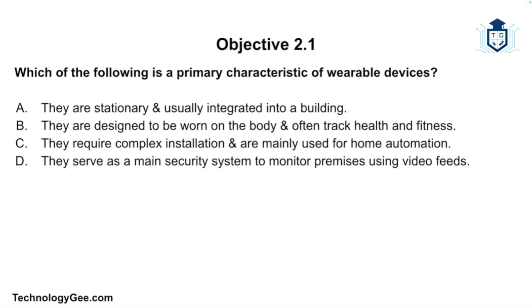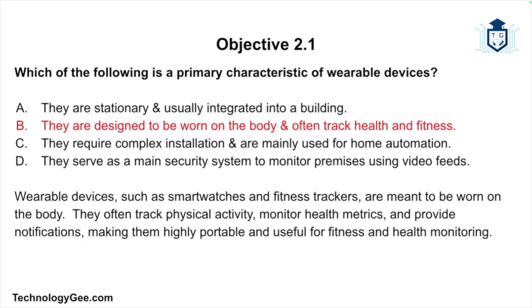Final question: which of the following is a primary characteristic of wearable devices — they are stationary and integrated into a building; they are designed to be worn on the body and often track health and fitness; they require complex installation and are mainly used for home automation; or they serve as a main security system using video feeds? The answer is they are designed to be worn on the body and often track health and fitness. Wearable devices such as smartwatches and fitness trackers track physical activity, monitor health metrics, and provide notifications, making them highly portable.